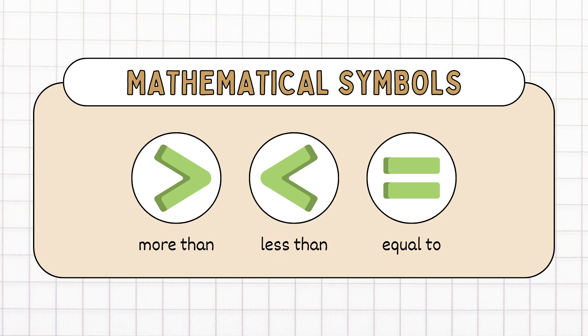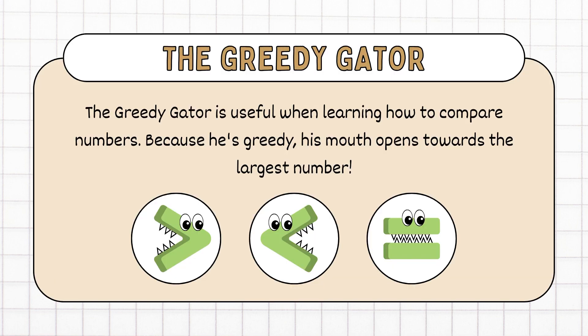Mathematical symbols: more than, less than, and equal to. The Greedy Gator is useful when learning how to compare numbers. Because he is greedy, his mouth opens towards the largest number.